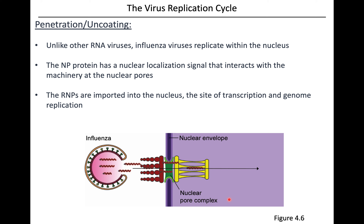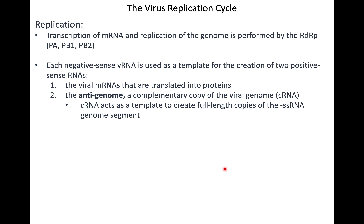The M2 ion channel in the viral envelope allows hydrogen ions into the virion, disrupting the secondary structure holding those ribonucleoprotein particles in place and fully releasing them. Influenza virus is unique among RNA viruses in that it goes into the nucleus - those nucleic acid particles go through the nuclear pore into the nucleus, where transcription and genome replication take place.